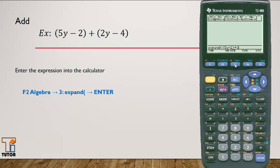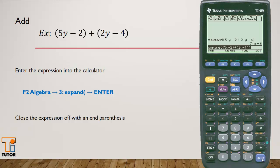I'll open up a begin parenthesis for my second binomial. And now I'll close off the expand function with a set of parentheses. And we have it: 7y-6.